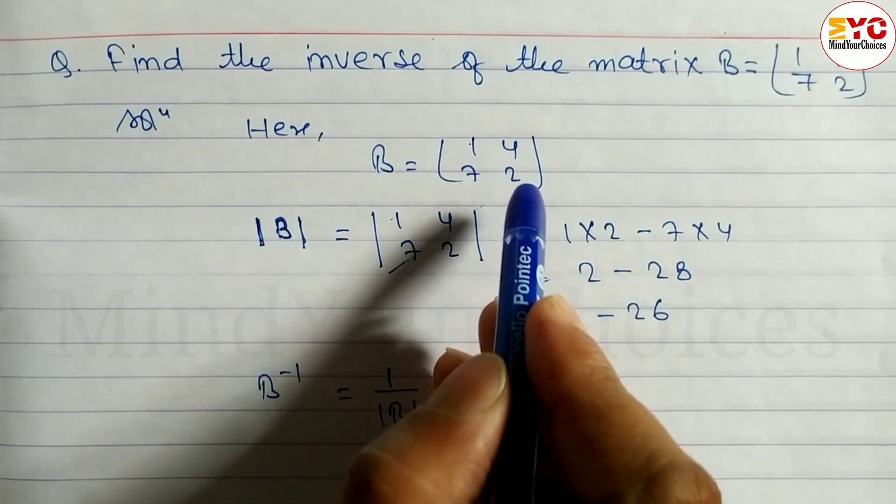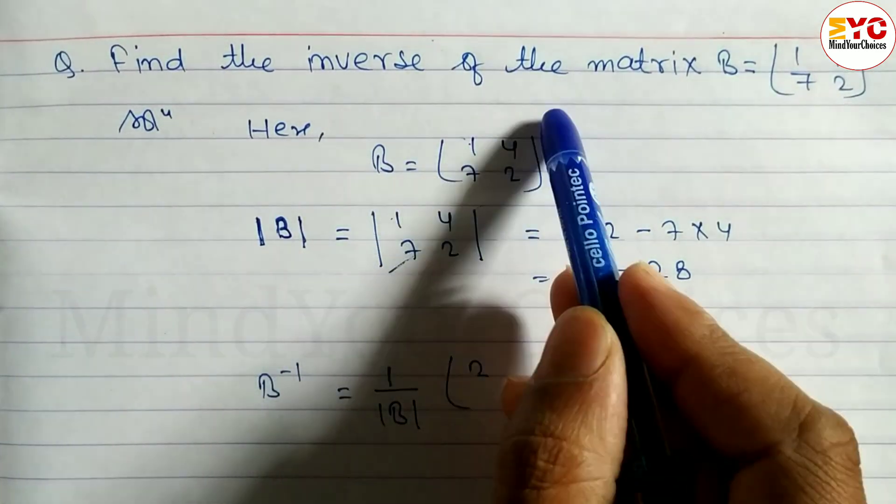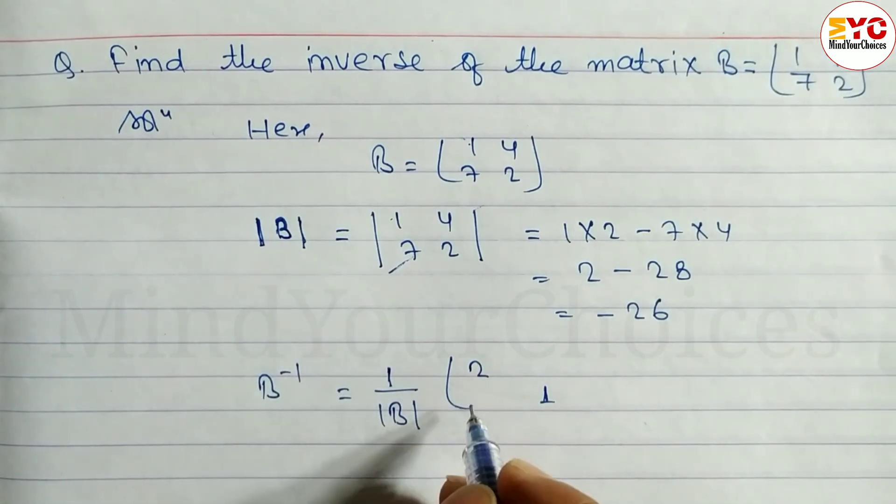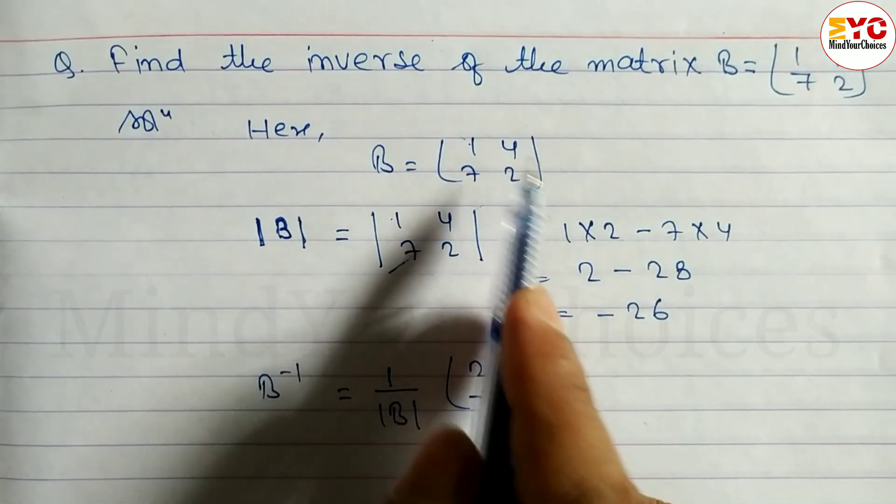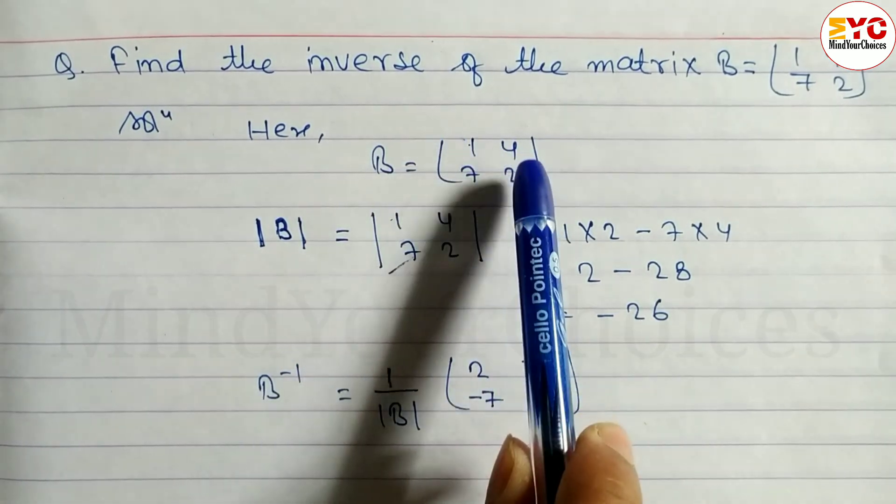We have to change the elements of the main diagonal and multiply the non-diagonal with negative. So in place of 7 we write minus 7, in place of 4 we write minus 4. We interchange the main diagonal elements and multiply the non-diagonal by minus.